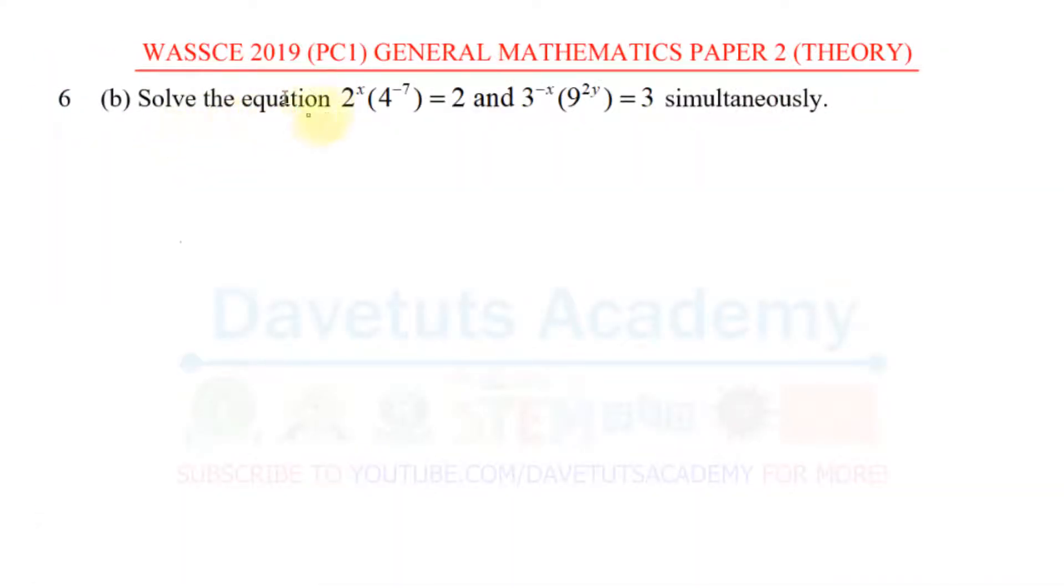In this question we have to solve the equation 2^x × 4^(-7) = 2 and 3^(-x) × 9^(2y) = 3 simultaneously.